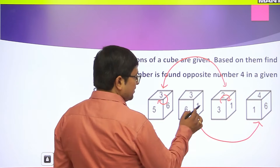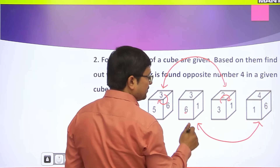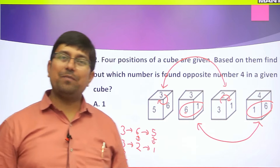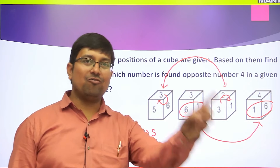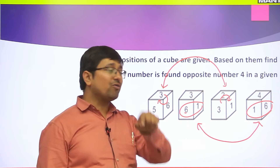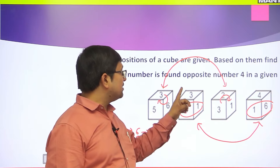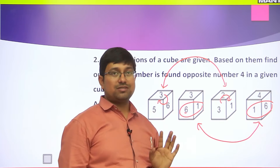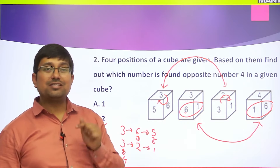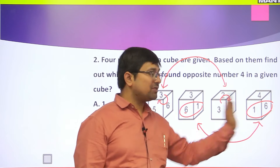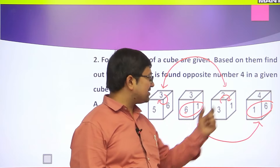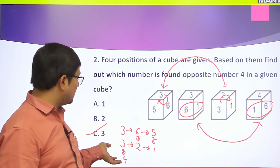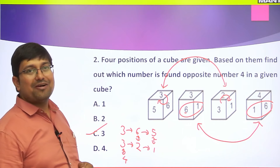These two images of the same dice have two faces which are common. When two faces are common, you can only determine one pair of opposite faces - and those will be the uncommon faces. The uncommon faces, four and three, are opposite to each other. This is the second property: if two images of the same dice have exactly two common faces, the uncommon faces are opposite.